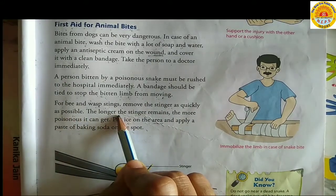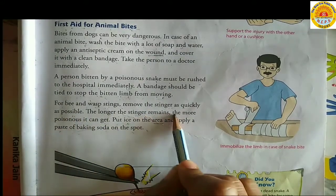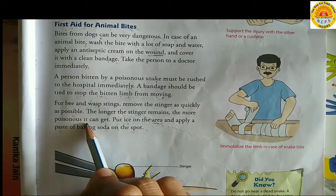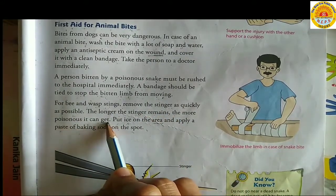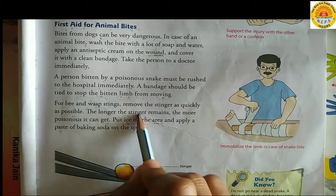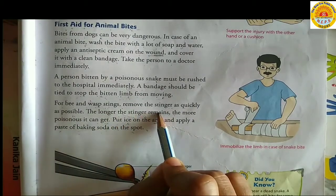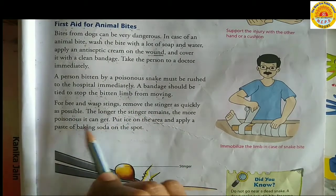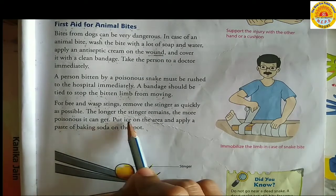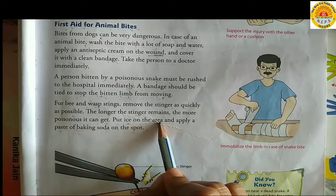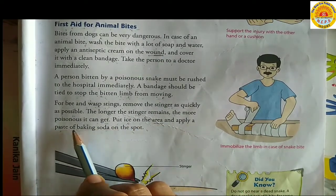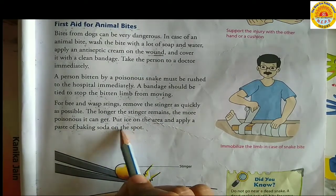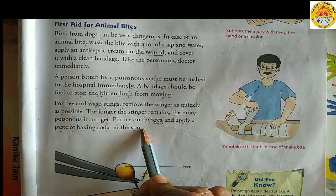The longer the stinger remains, the more poisonous it can get. Put ice on the area and apply a paste of baking soda on the spot.